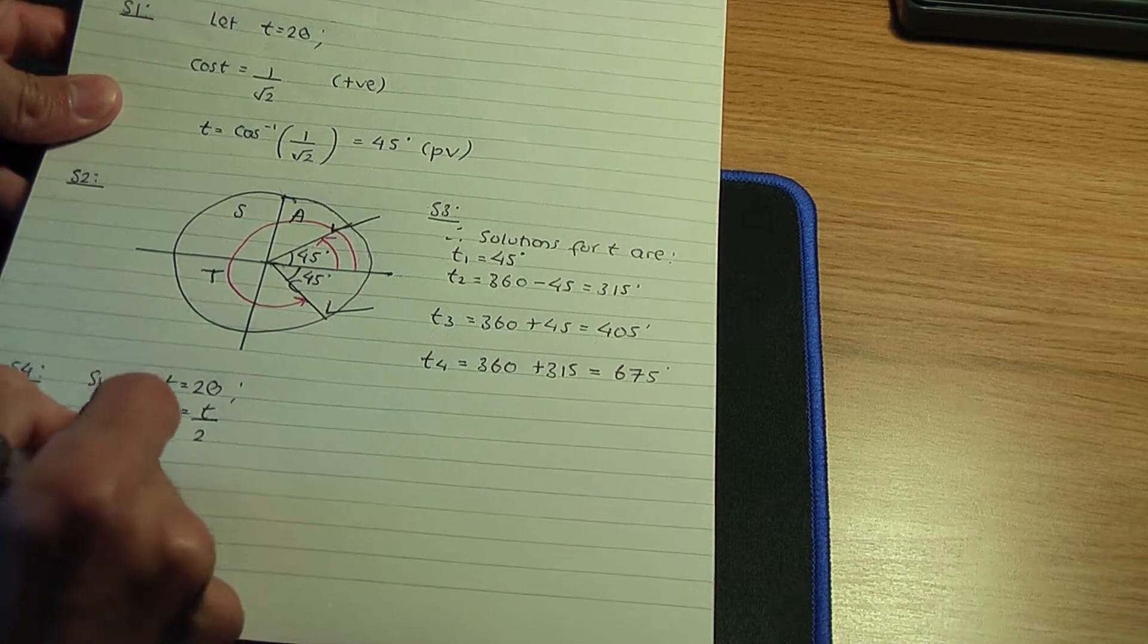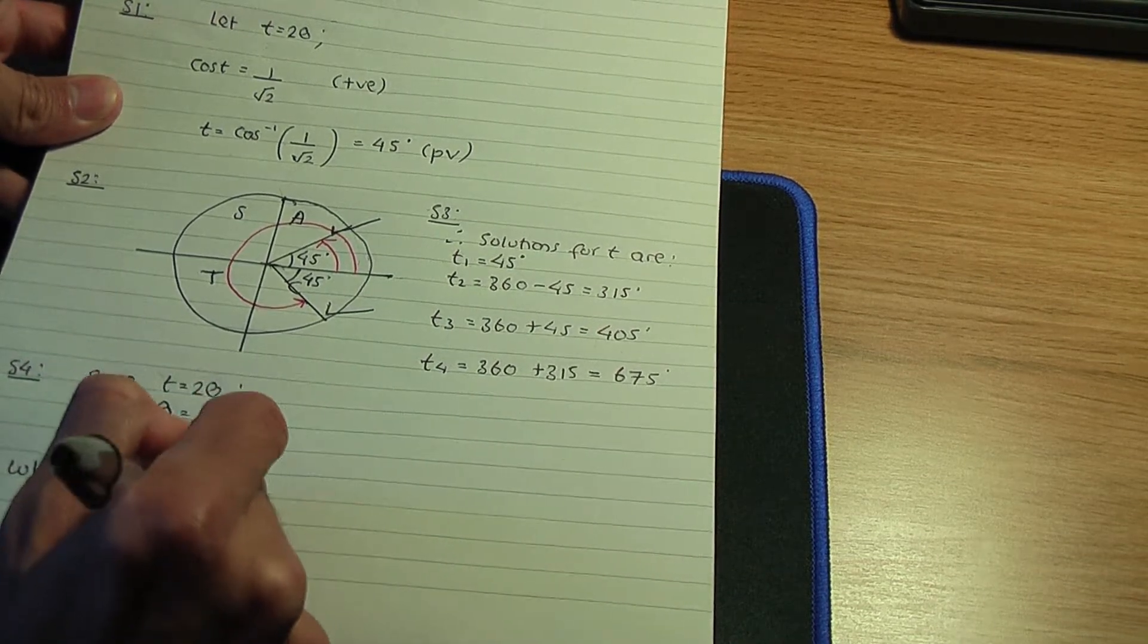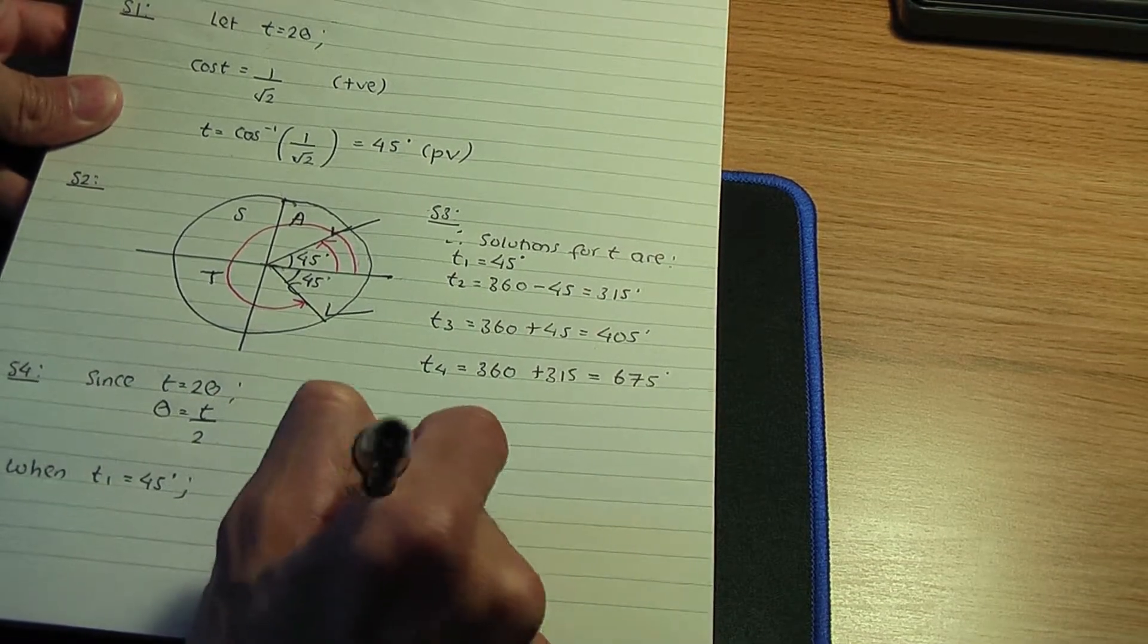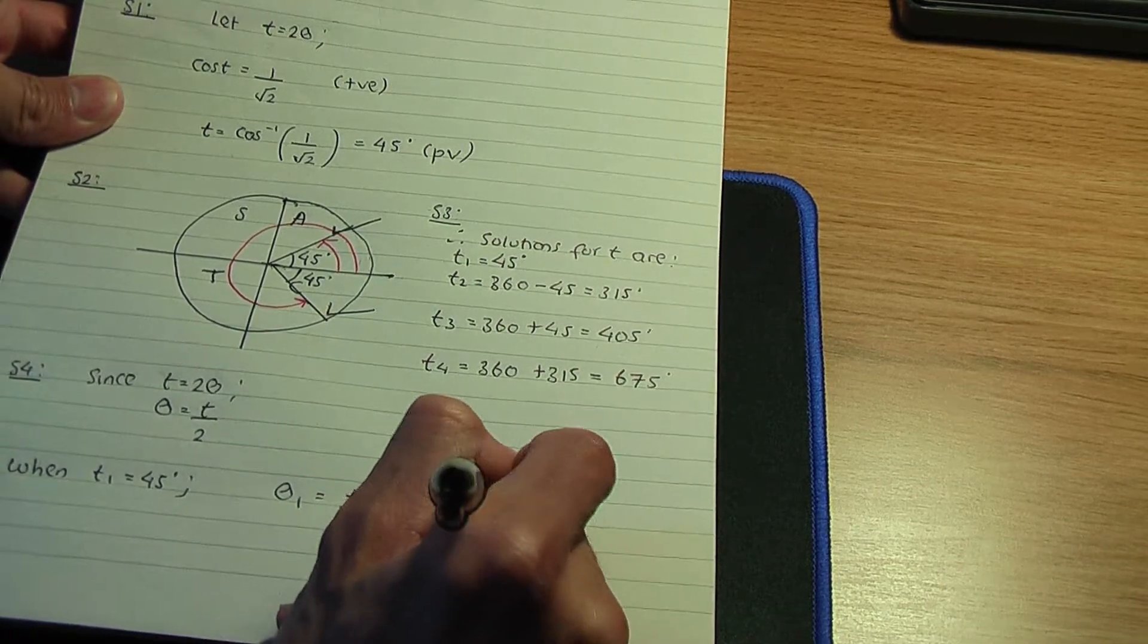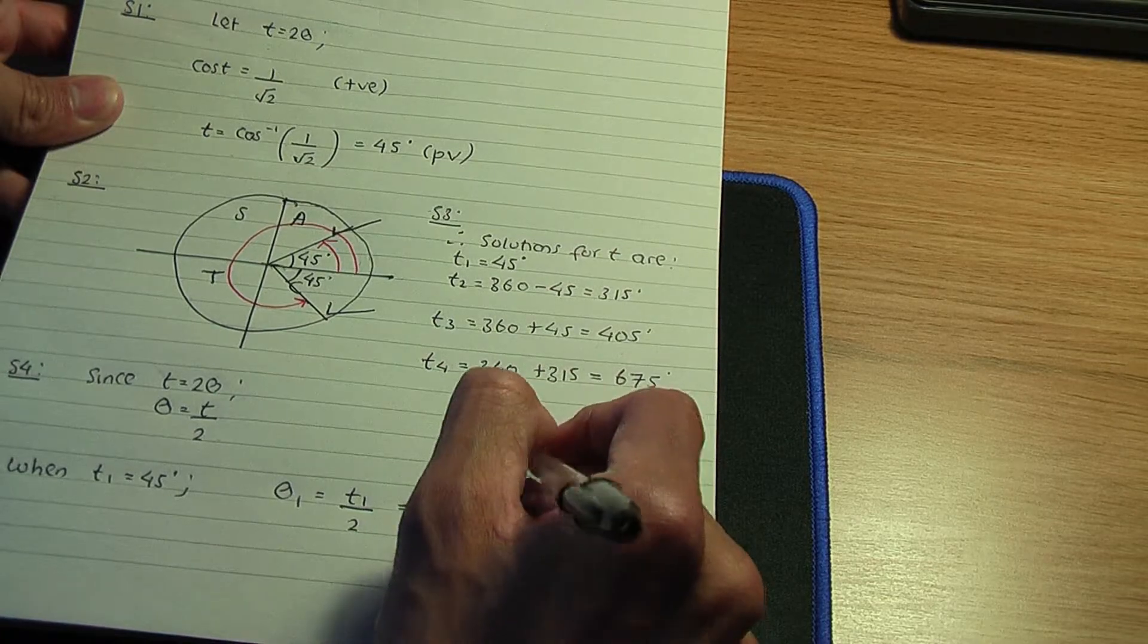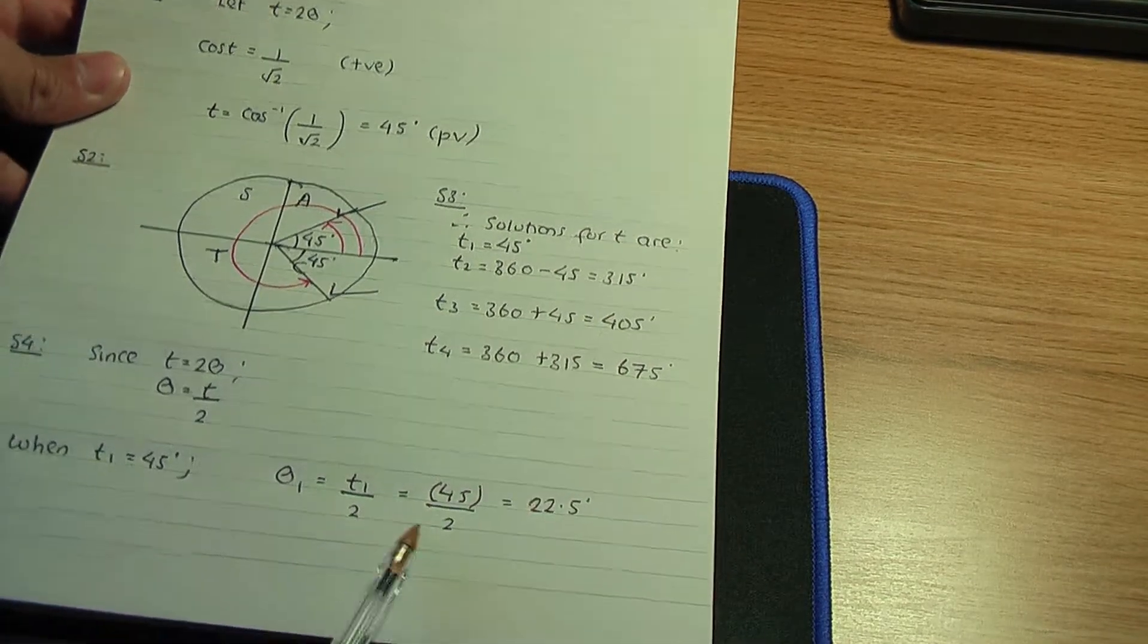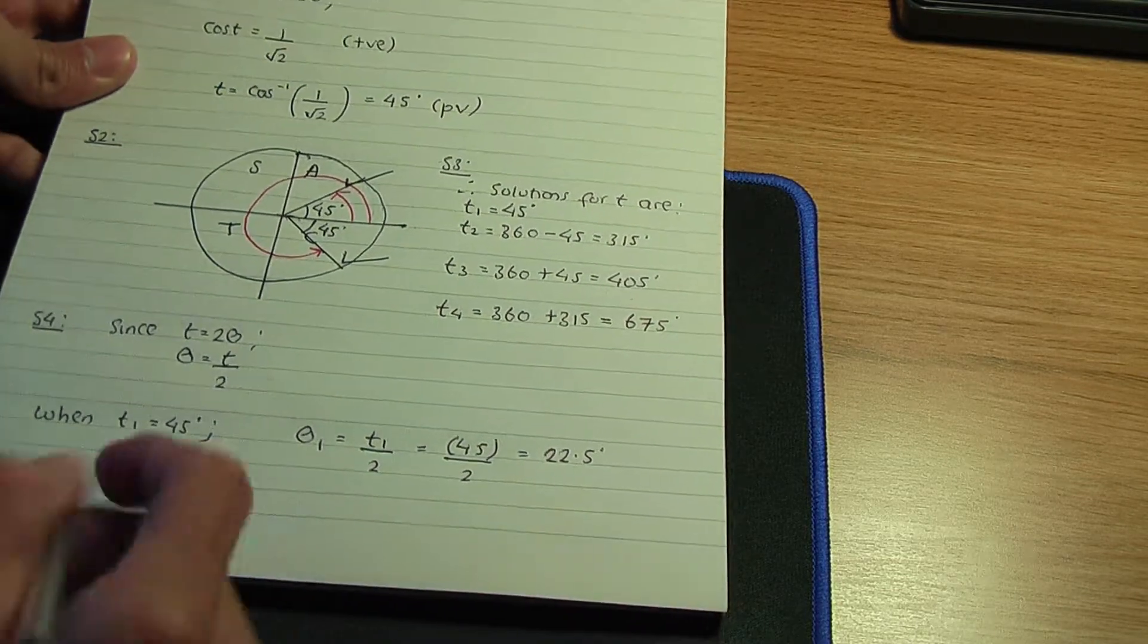Since t = 2θ, that means θ will be t/2. So we need to divide all of our t solutions by 2. So firstly, when t1 is 45 degrees, θ1 will be t1/2, t1 is 45 degrees over 2, so that being 22.5 degrees. So that is the first solution for θ1.